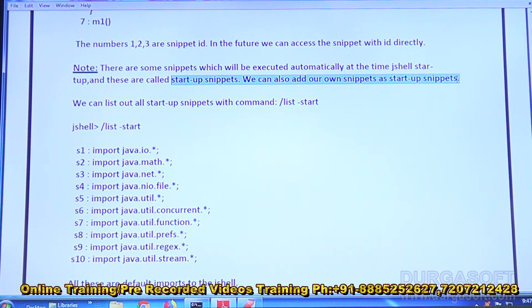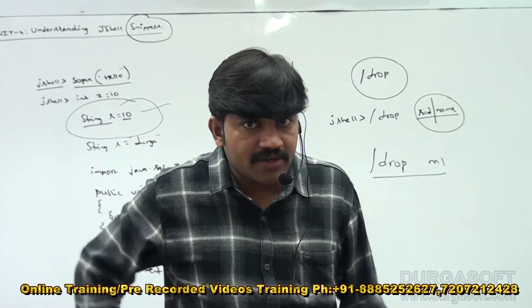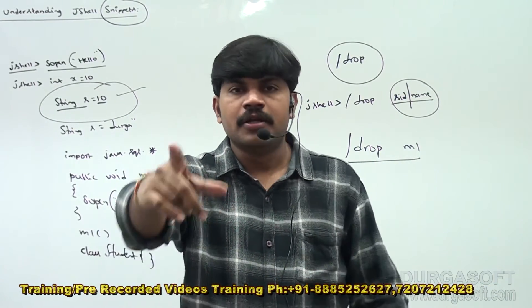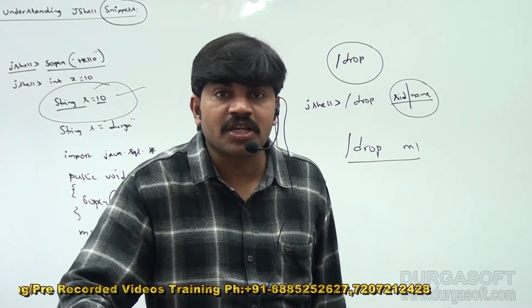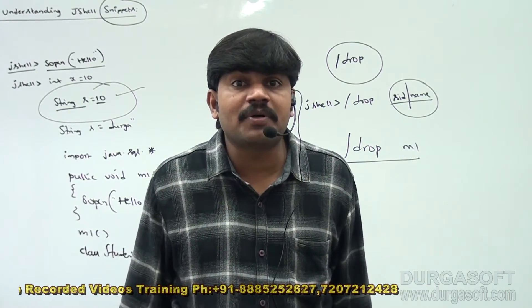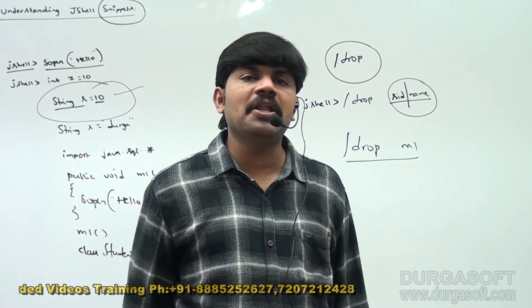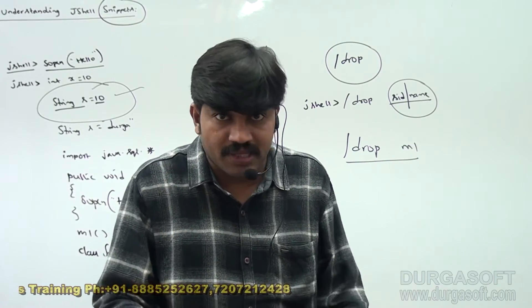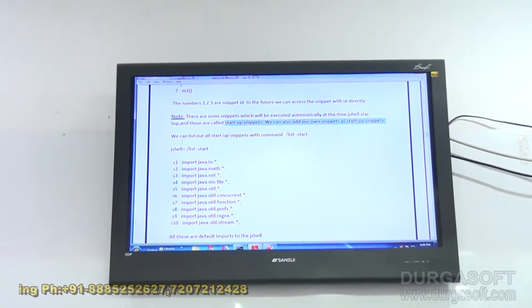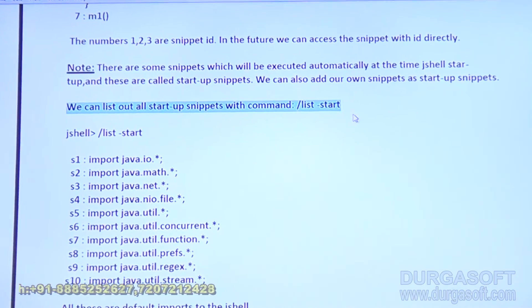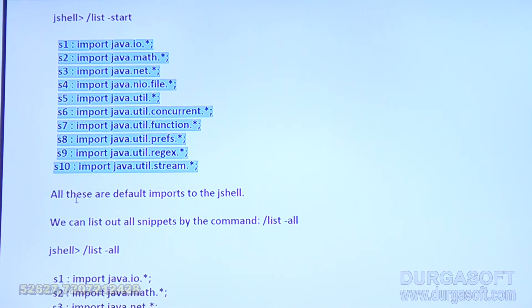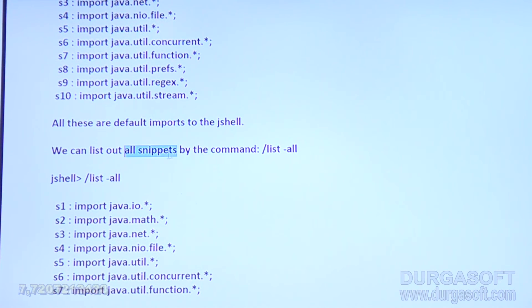Some code snippets are executed automatically at the time of JShell startup — these are called startup snippets. We can also add our own snippets to the startup snippets. Which snippets are startup snippets? All import statements — the 10 import statements — are by default startup snippets. I want to use my own snippets executed automatically at startup. That is possible. You can customize startup snippets, which we will discuss in the next video.